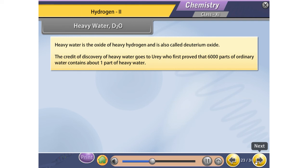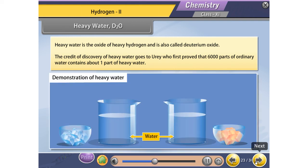Demonstration of heavy water: First, take two beakers filled with water. Drop an ice cube which is blue in color in the first beaker and see that ice floats on water. In another beaker, drop another ice cube which is red in color of heavy water D2O. You will see that the ice cube sinks in the water.